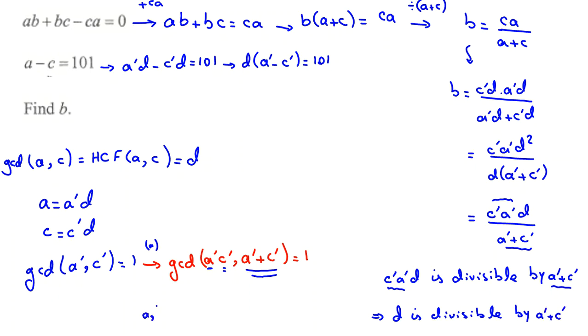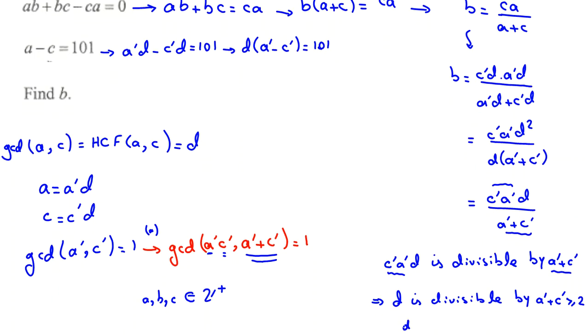The problem says A, B, and C are positive integers. So we can say a prime plus c prime, each of them at least 1, so at least 2. Also a prime, c prime should be positive integers. A prime plus c prime at least 2. So D is divisible by a number that is at least 2. So we can say D is at least 2. Now if we apply it here, D times this number is 101.